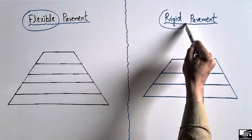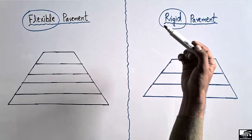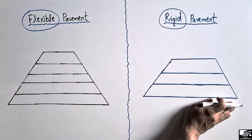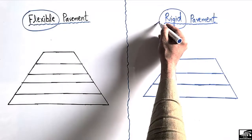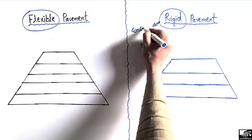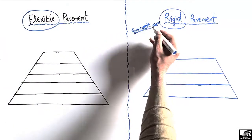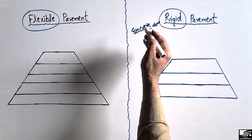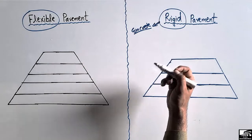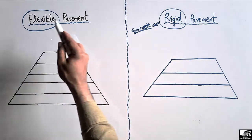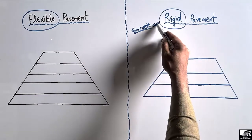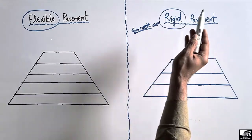In the case of rigid pavement, it is known as rigid because it has high rigidity due to the material used in its construction. This rigid pavement is usually made with concrete material, and it has high stiffness, high rigidity, and high modulus of elasticity, so it shows high brittleness behavior compared to flexible pavement.